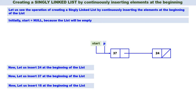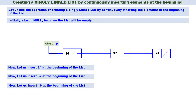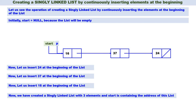Now let us insert 16 at the beginning of the list. 16 has to be inserted before 37. Therefore we create a new node pointed by P. The information part of this new node should contain 16. The address part of the new node should be pointing to start, meaning P of next is equal to start — connection is established, 16 is connected to 37. Now start should contain the address of 16, so start is equal to P. Now we have created a singly linked list with three elements: 16, 37, and 24, and start contains the address of this list.